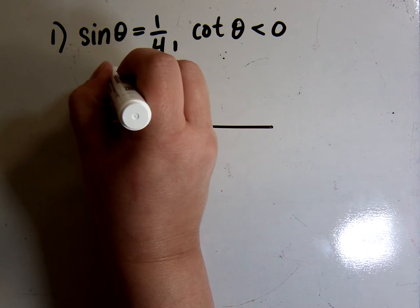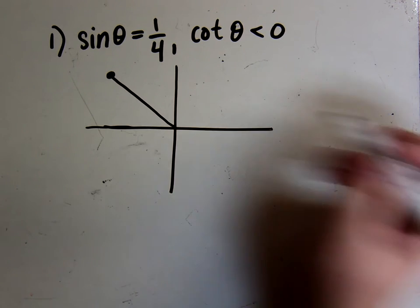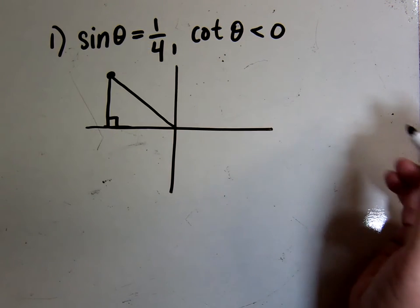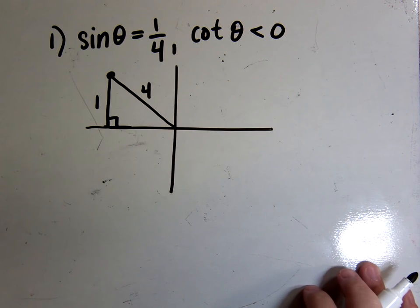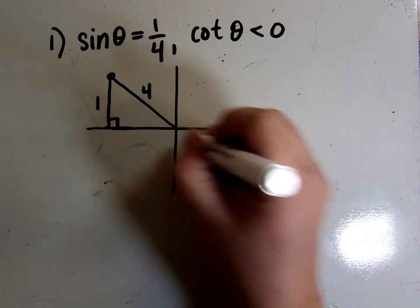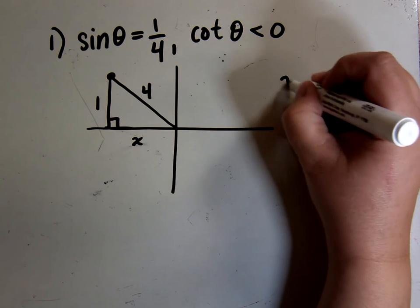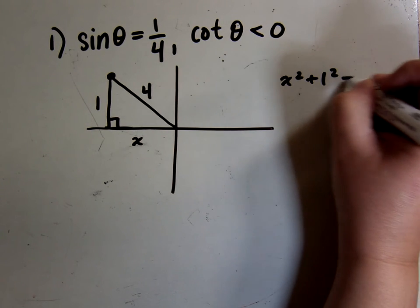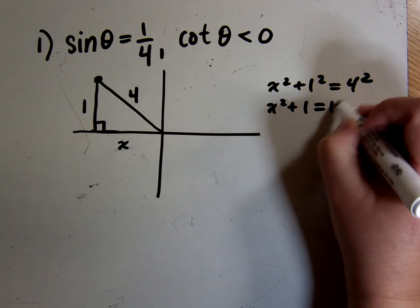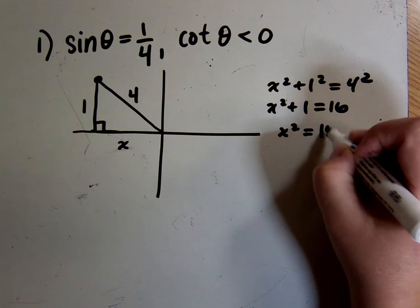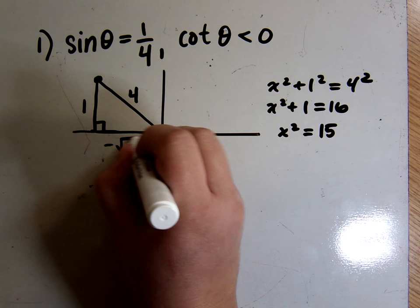The sine is 1 over 4, which means opposite over hypotenuse is 1 over 4. So I need to use the Pythagorean theorem to find the adjacent side. x squared plus 1 squared equals 4 squared, giving x squared plus 1 equals 16, so x squared is 15, and x is the square root of 15. But we're going to the left in quadrant 2, so it's negative square root of 15.